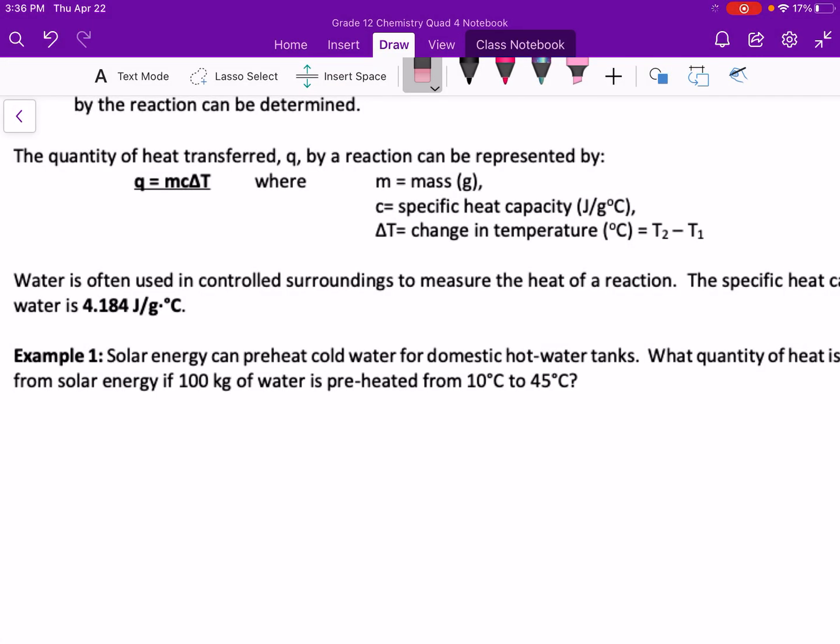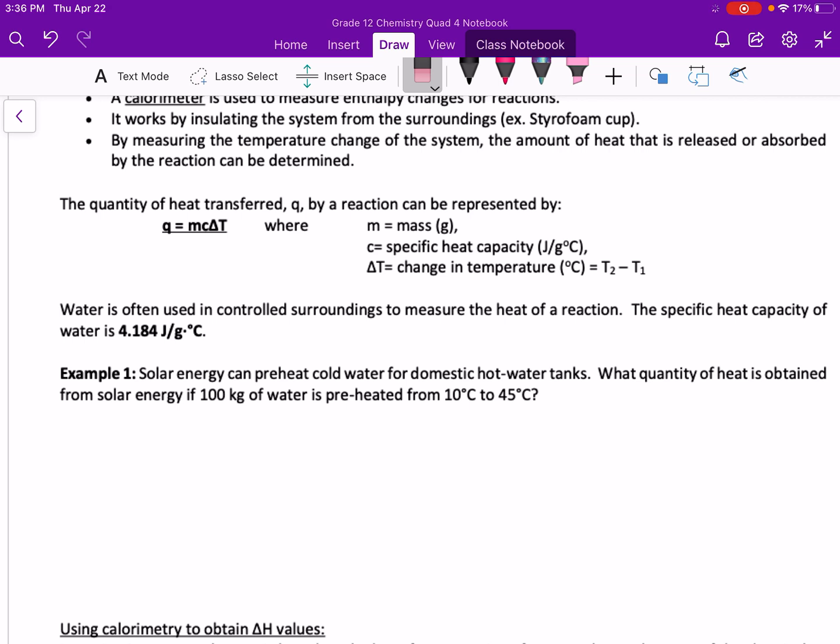In this example we're looking at solar energy which can preheat cold water for domestic hot water tanks. We want to know what quantity of heat is obtained from solar energy if we have 100 kilograms of water preheated from 10 degrees Celsius to 45 degrees Celsius.